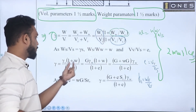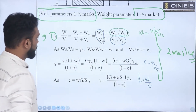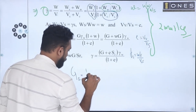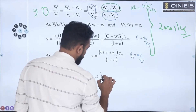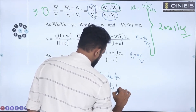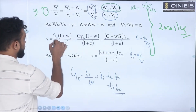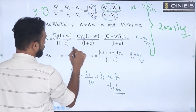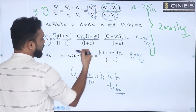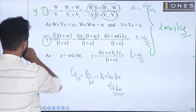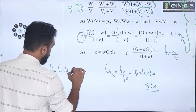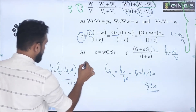This gives us gamma equal to 1 plus W divided by 1 plus E. And since gamma S equals G times gamma W, we substitute to get: gamma is equal to G times gamma W times (1 plus W), divided by (1 plus E). This is the final derived relationship between bulk unit weight, specific gravity G, water content W, and void ratio E.